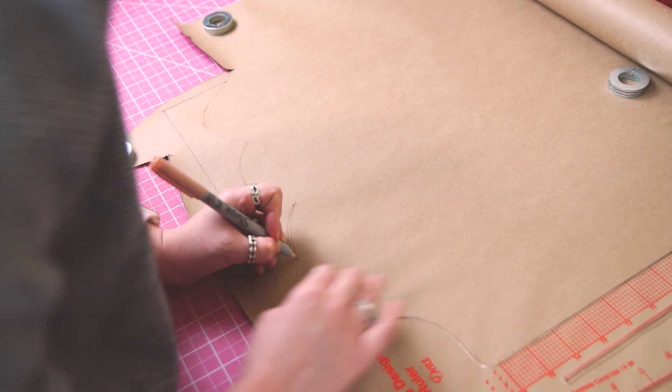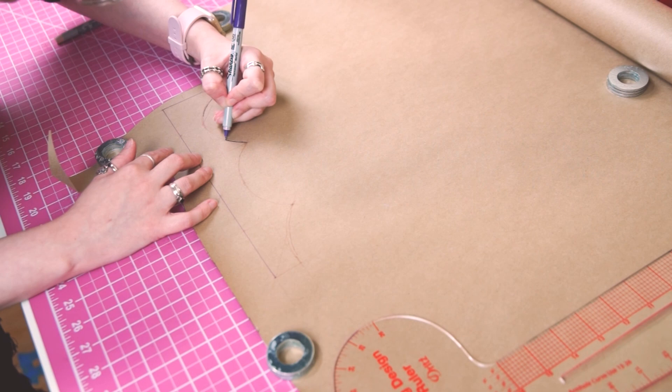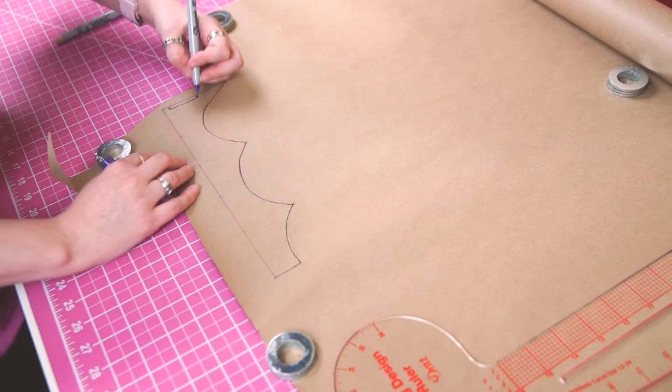But I highly recommend having something to give you a general round curve that you can even out. Once I'm happy with my curves I switched back to a darker colored marker and retraced the final shape.